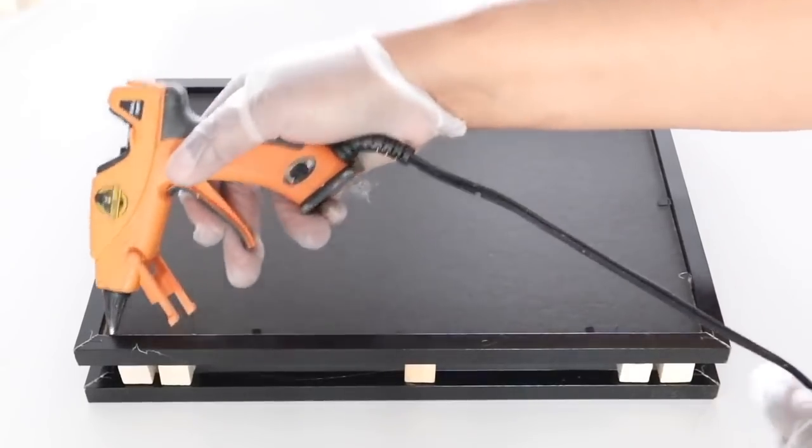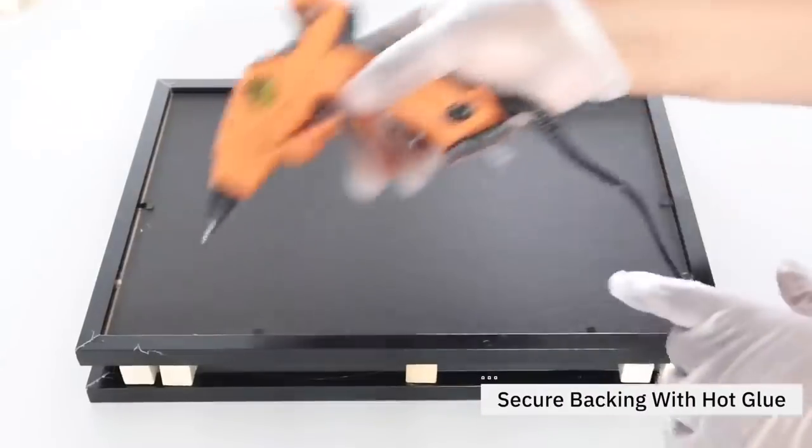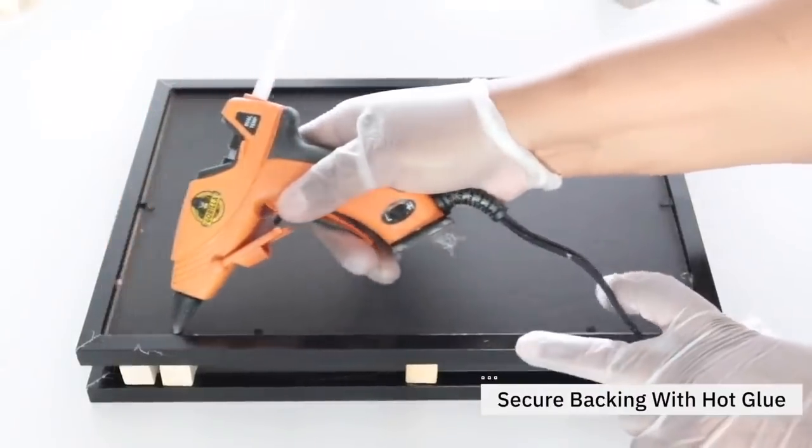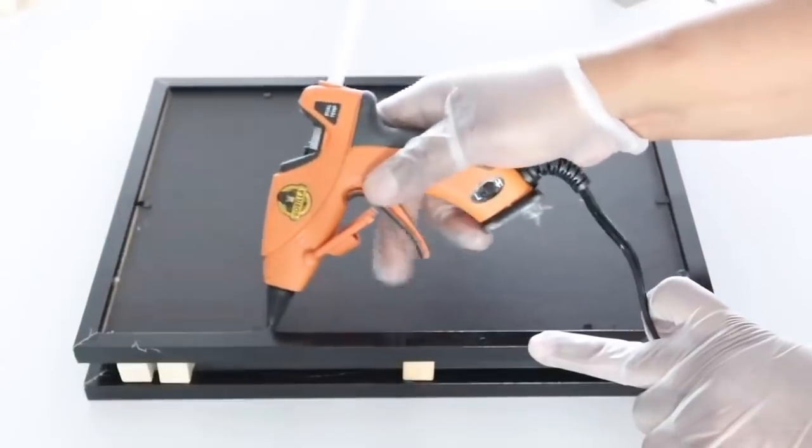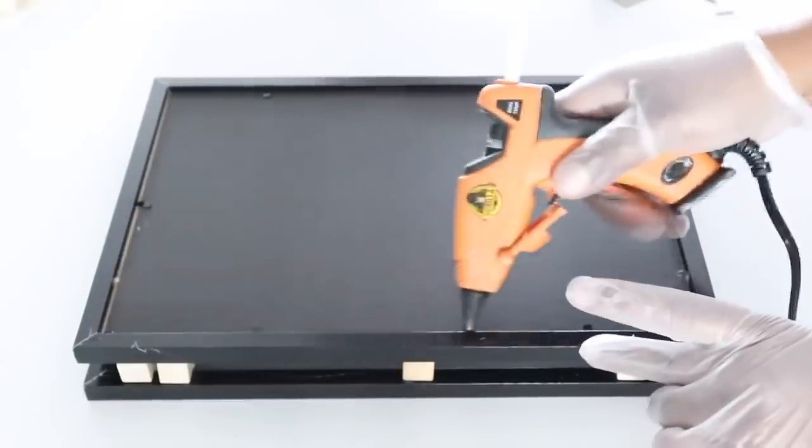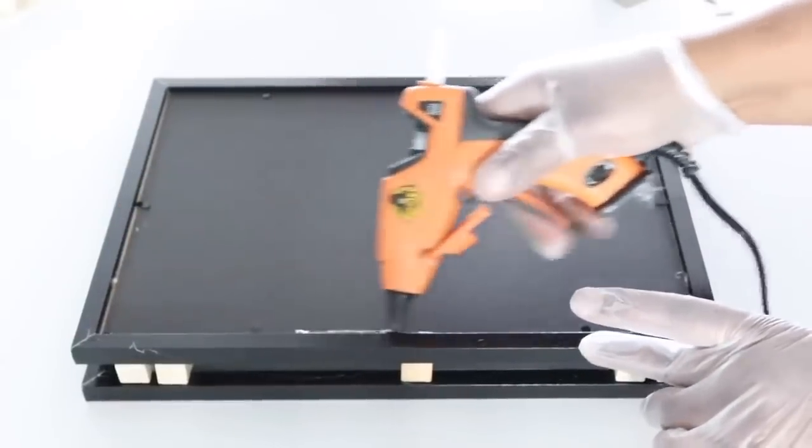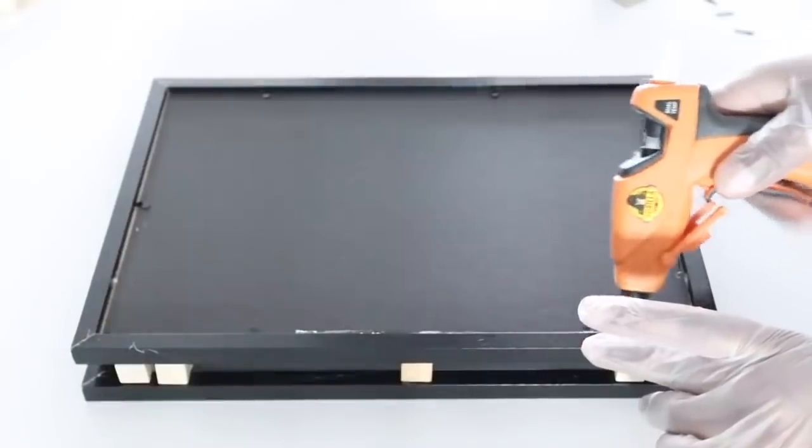The next step is to add hot glue to make sure there is no seams that are open. Please ignore the frame that's underneath it. I decided not to move forward with having it there.